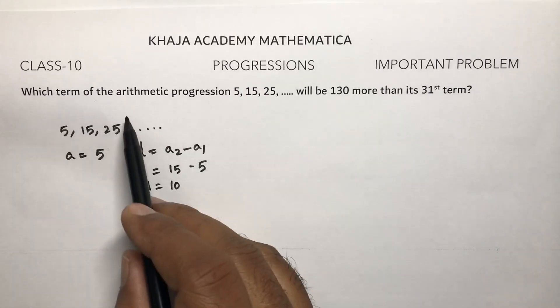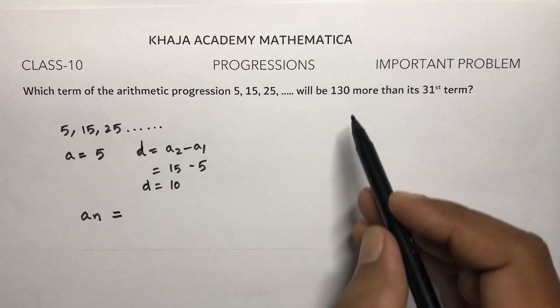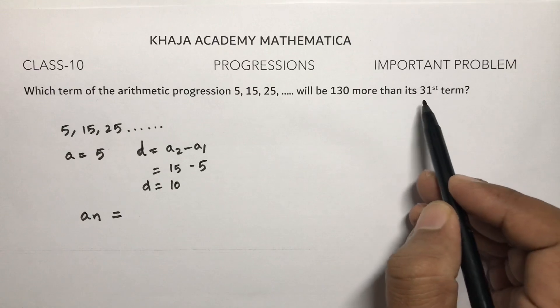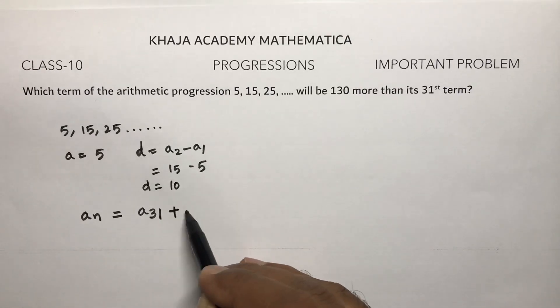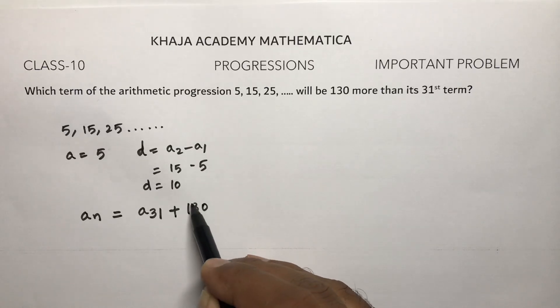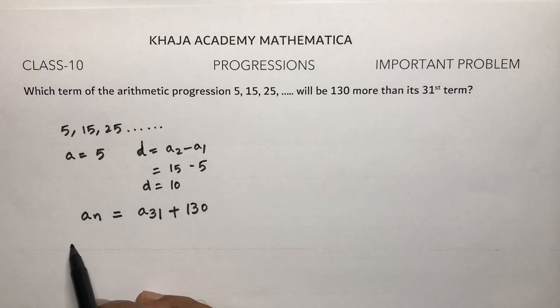Which term of the arithmetic progression? Let the term be aₙ. aₙ is 130 more than the 31st term, so a₃₁ plus 130. The formula for aₙ is a plus (n-1) times d.